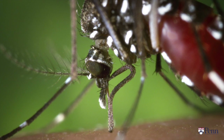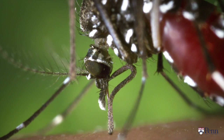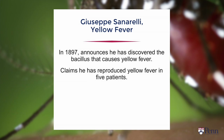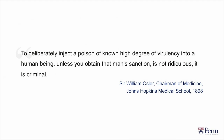All of this came to a head in the late 1800s and early 1900s with research into yellow fever. In 1897, Sonnarelli, a researcher in Latin America, announced he had discovered the bacillus that caused yellow fever and could reproduce yellow fever in five patients by infecting them with the bacillus — leave aside that yellow fever is not caused by a bacillus. When Sonnarelli presented that data, Sir William Osler, at that time the most important physician in the entire world and chairman of medicine at Johns Hopkins Medical School, got up at a national meeting and condemned Sonnarelli. He said: to deliberately inject a poison of known high degree of virulency into a human being, unless you obtain that man's sanction, is not ridiculous — it's criminal. So the most important physician in the world is condemning research without consent as criminal.